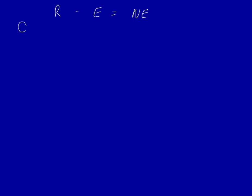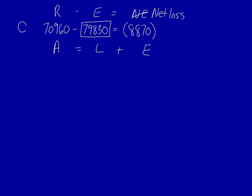Let's move on to number C. Revenue is known. Expenses are unknown. Net earnings? It's negative 8,870, which indicates it's not net earnings, it's actually a net loss. Solve for the unknown number and we get 79,830. You can see that the expenses are higher than the revenue, which is what caused the loss. Moving on to the basic accounting equation. Assets are unknown. Liabilities are known. As is equity. Solve for the unknown number and we get 101,250.